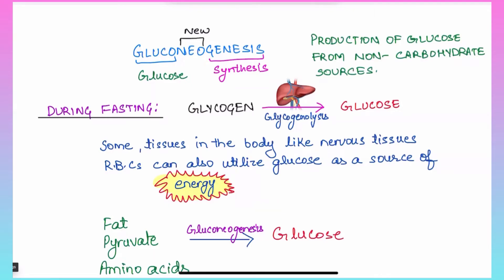When you have stopped eating carbohydrates from outside, we have few stores of glucose already present in the body in liver and skeletal muscle — majorly present in liver. Glycogen starts breaking down into glucose by a process called glycogenolysis to support the body's ATP needs, but some tissues like nervous tissue and RBCs can only utilize glucose as a source of energy, and that's why gluconeogenesis comes into action.